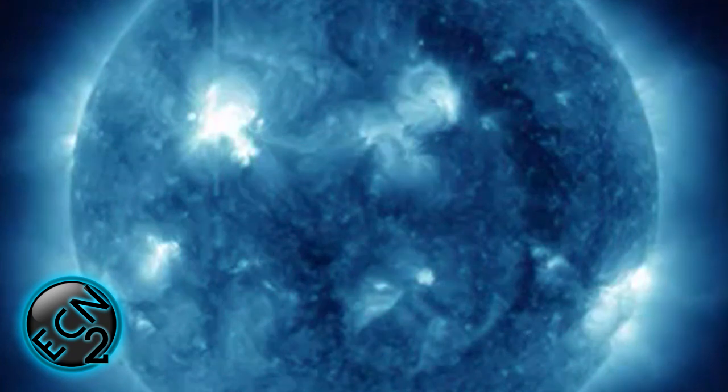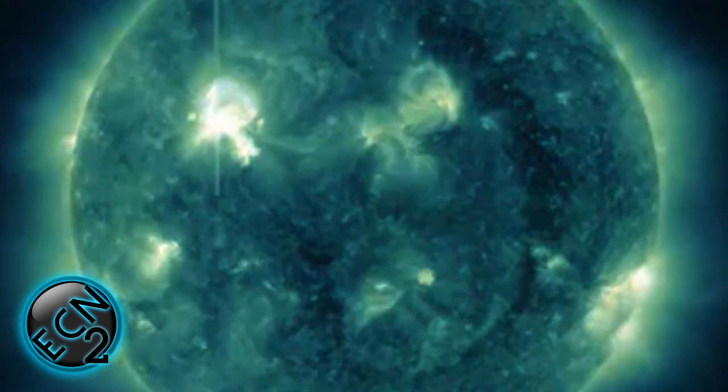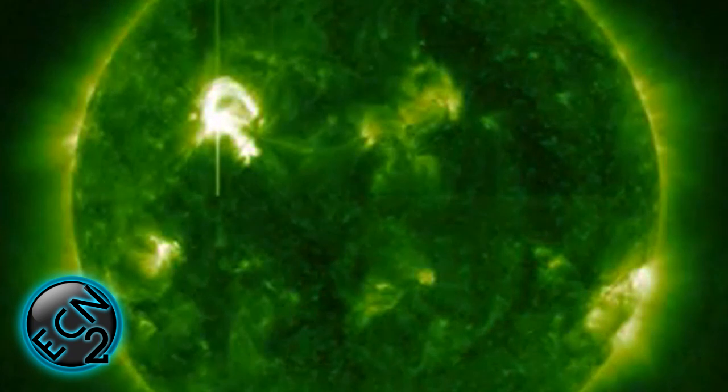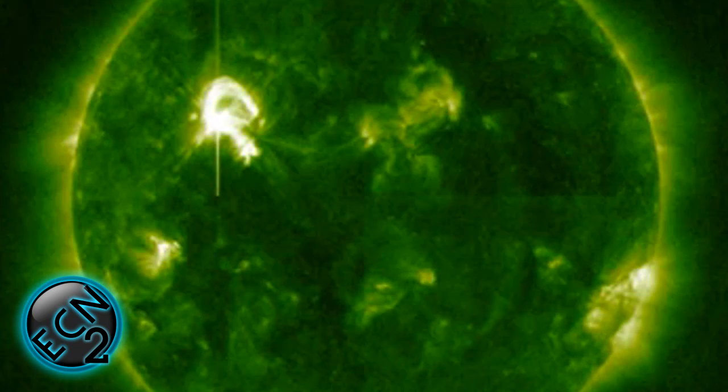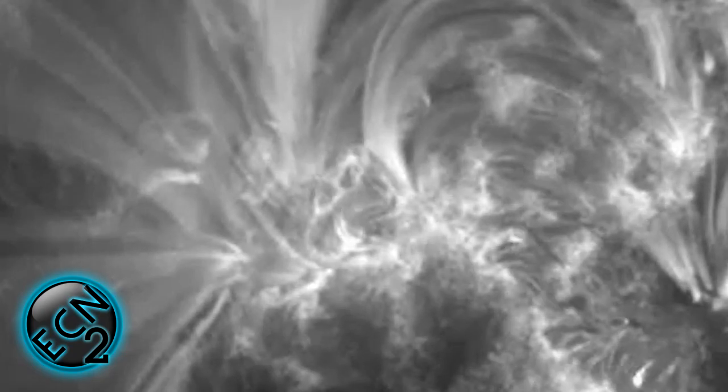The sunspot's beta-gamma-delta magnetic field harbors energy for X-class flares, the most powerful kind, and it seems that Earth is entering the firing line as the sunspot rotates across the face of the sun. So keep watch for that.